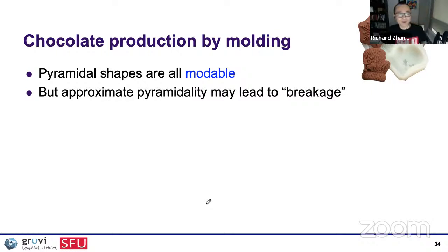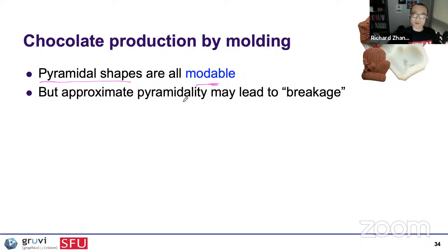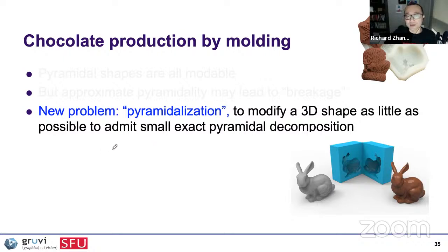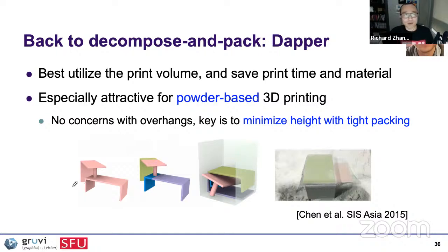Pyramidal shapes are moldable — you can make molds, pour in chocolate, and take it out without breaking it. If you relax to approximate pyramidality, it may lead to breakage. An interesting problem we thought about was pyramidalization: if a shape doesn't admit a small exact pyramidal decomposition, you can slightly modify it so it would admit one with few parts. We eventually went back to the decompose-and-pack problem — DAPPER. As I mentioned, the decompose-and-pack solution can best utilize the print volume, saving print time and material, which is especially attractive for powder-based 3D printing.